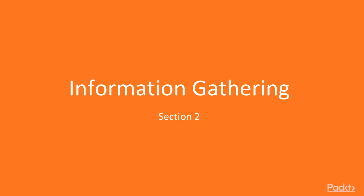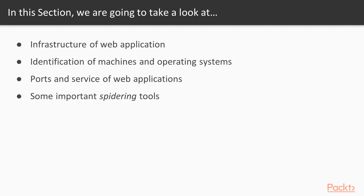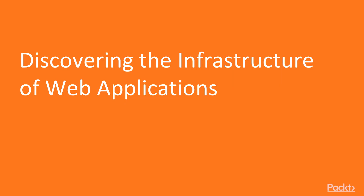Hello and welcome students to Section 2 of the course: Information Gathering. In this section, we will learn how to gather information about web applications — all the basic concepts — then how to identify machines and OS of the web server, then how to find port numbers and services available in web applications, and some more spidering tools regarding websites.